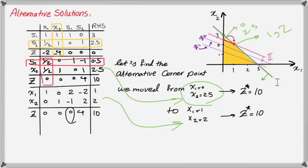An important point: an alternative solution occurs when your objective function is parallel to one of your constraints. This is a necessary condition but not a sufficient condition, because if the direction of your objective function movement is opposite, you are not hitting that portion of the constraint and therefore you don't have an alternative solution. Do not jump to the conclusion that you have an alternative solution just because your objective function is parallel to one of your constraints — the direction of movement also matters.